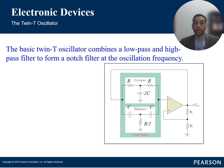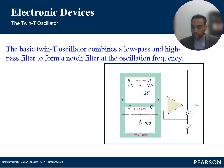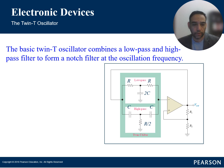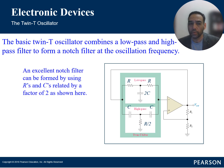Welcome back. Let's continue — this is part two of oscillators. We're going to continue with the basic twin-T oscillator, which combines a low-pass and high-pass filter to form a notch filter. We've discussed how this works with other filter circuits, and we do this at the oscillation frequency, whatever frequency we designed.